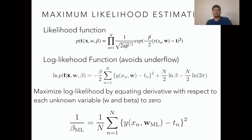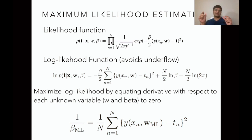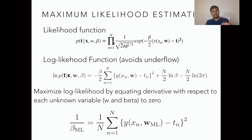Maximum likelihood estimation is now straightforward. You have the likelihood function; you first convert it into a log likelihood function. Why? Because this is a product of probabilities, and multiplying numbers between 0 and 1 results in even smaller numbers — for example, 0.1 times 0.2 gives 0.02. Multiplying probabilities leads to underflow errors. To avoid those errors we take the log of the likelihood function so that the product is replaced by summations.